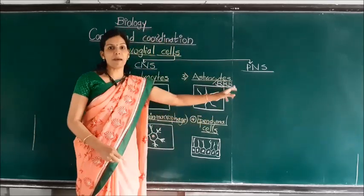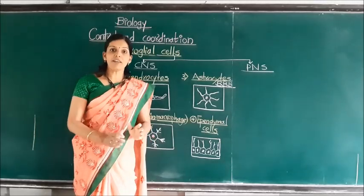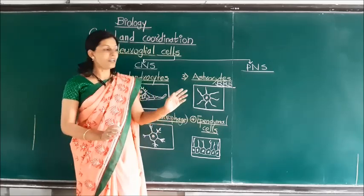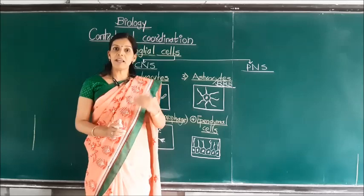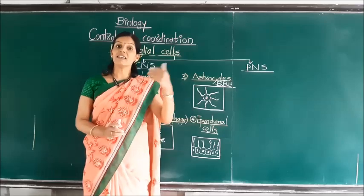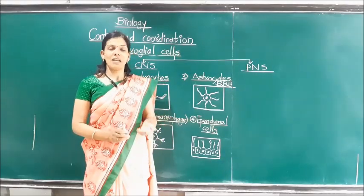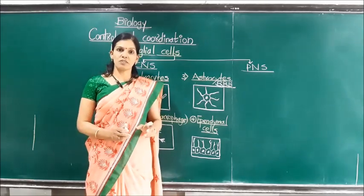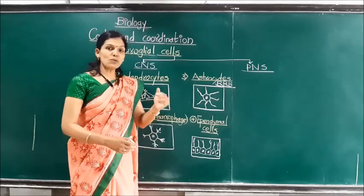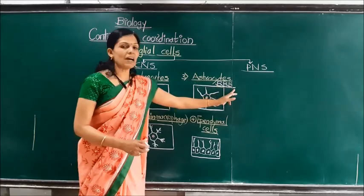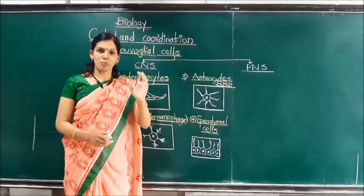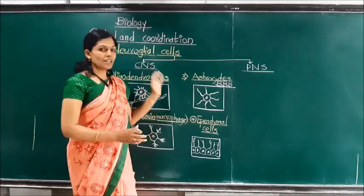What is the blood-brain barrier? In our nervous system, blood and brain are not directly connected. This is important because if the brain and blood were directly connected, pathogens from the blood could easily enter the brain and cause infection. To avoid the transmission of toxic or poisonous substances into the nervous system, the blood-brain barrier is very important, and it is maintained by astrocytes.